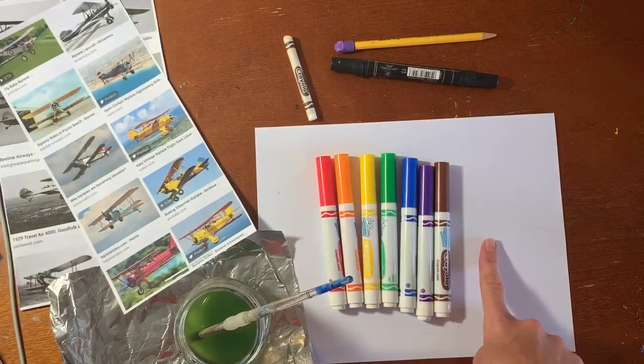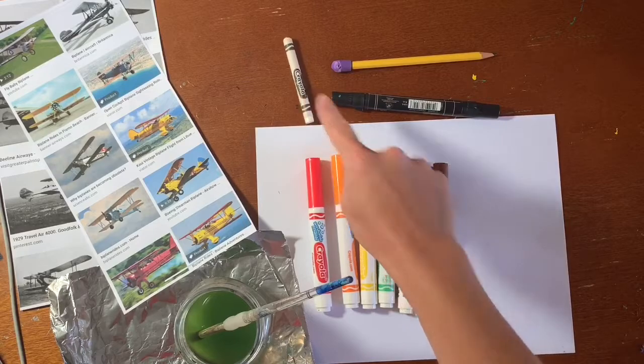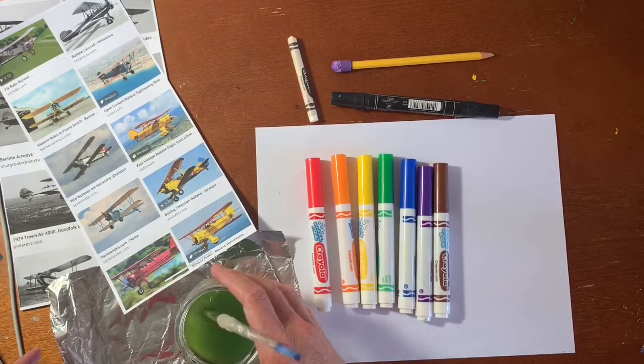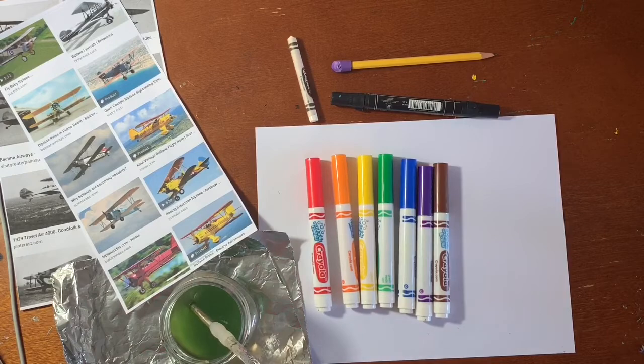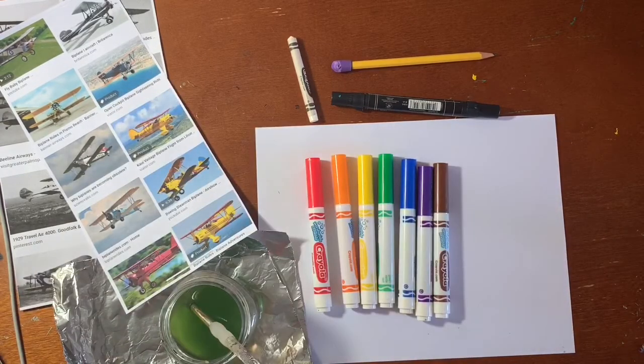For this project you'll need paper, markers, pencil and black Sharpie, white crayon, and blue watercolor paint. If you don't have it, you can use aluminum foil and a cup of water to create it yourself. Alright, let's get started.